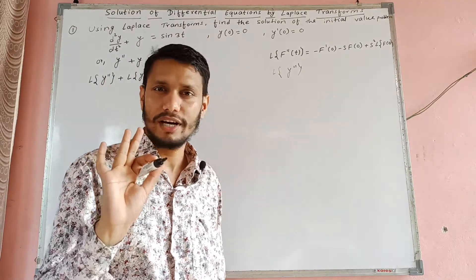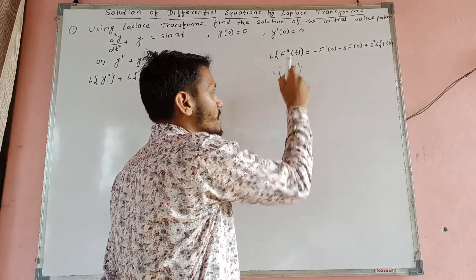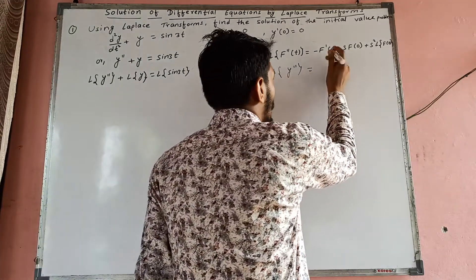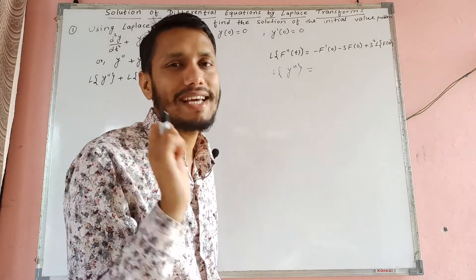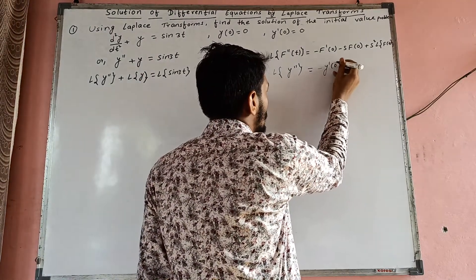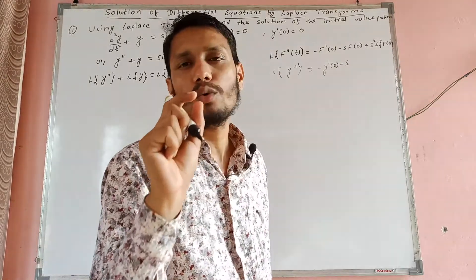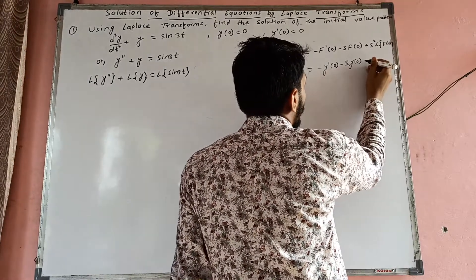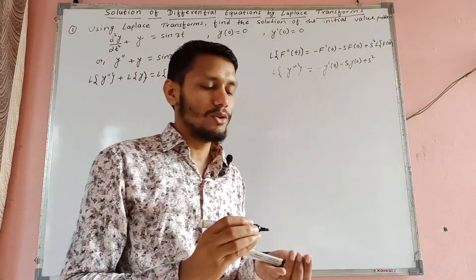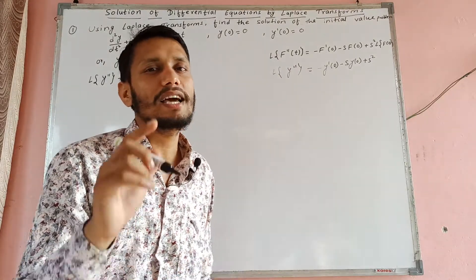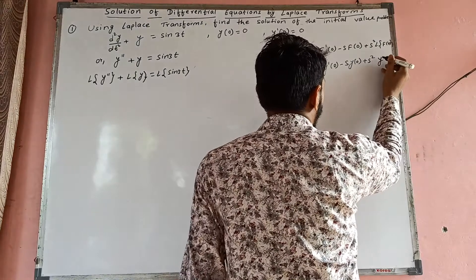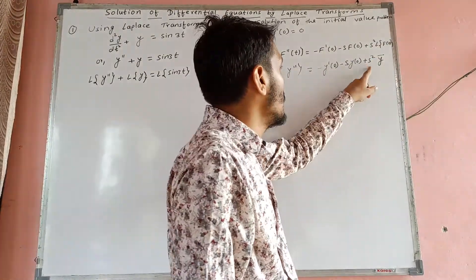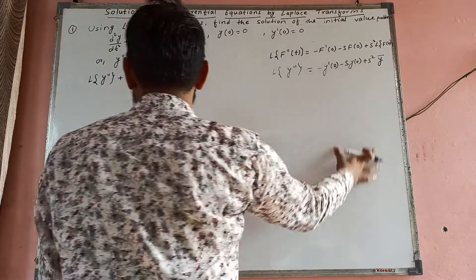Aaba y = f(t) yo. Aaba y double dash = d²y/dt² bayo. Is equals to: f'(0) = y'(0) bayo, minus y'(0), minus s times f(0) = y(0), plus s² times Laplace transform of y. Aaba yo value substitute garau.